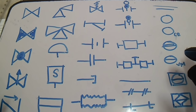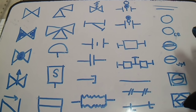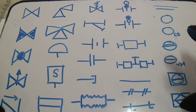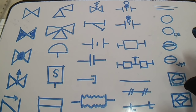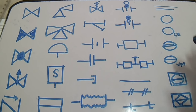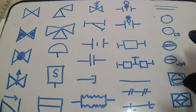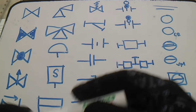Hi guys, welcome to Piping Welding channel. This is all about symbols — the symbols you can see in the P&ID, which is a Piping and Instrumentation Diagram. We will go through all the symbols for the P&ID starting from here.